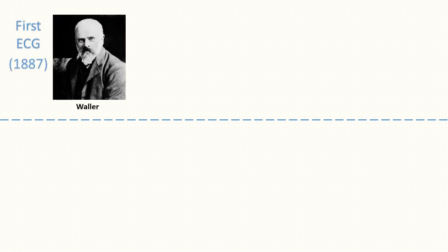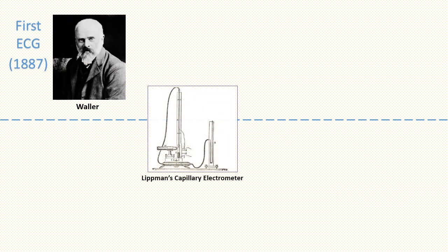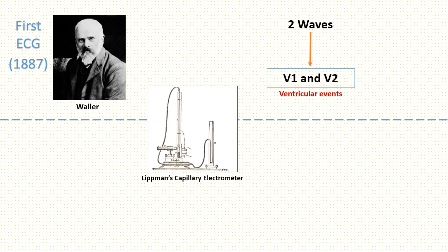The first human ECG recorded by physiologist Waller in 1887 with Lippmann's capillary electrometer revealed only two deflections. He labeled the two waves V1 and V2 to indicate their ventricular origin.